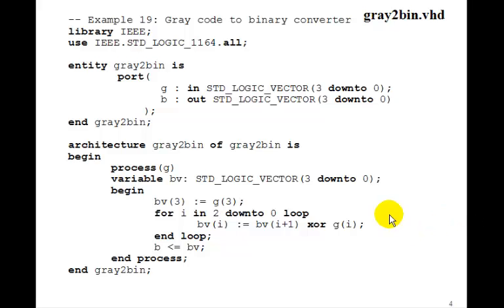To solve that problem, we need to use what's called a VHDL variable. Variables are defined inside of a process. We have process(g), and I'm going to define a variable BV, STD_LOGIC_VECTOR 3 downto 0. Then it's the variable BV that I'm going to assign to G[3]. Notice that we don't use the signal assignment statement. Variables get assigned using a colon equal operator.